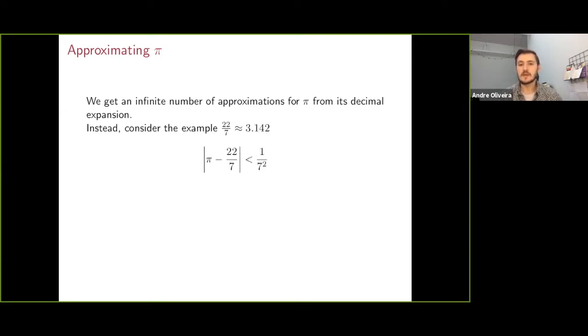However, another example is to use 22/7, and by observation we see that this gets within 1 over 7 squared of pi. Using one of the rational approximations from the decimal expansion, we see that 314 over 100 only gets within 1 over 10 squared of pi. And so this slight improvement in the accuracy of the approximation requires a huge jump in the denominator of the rational.